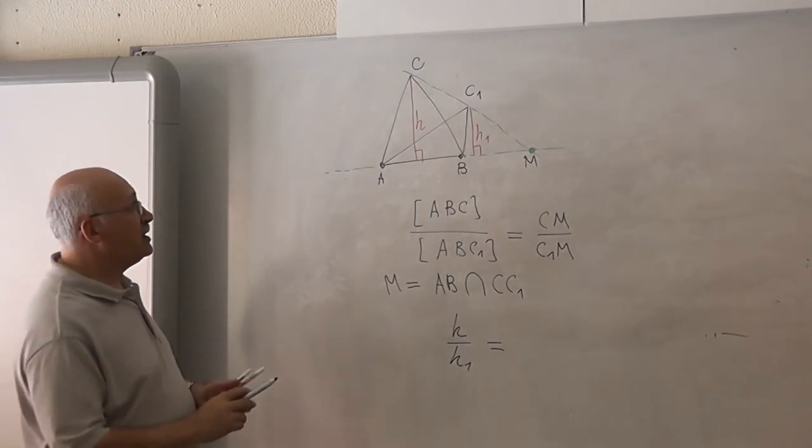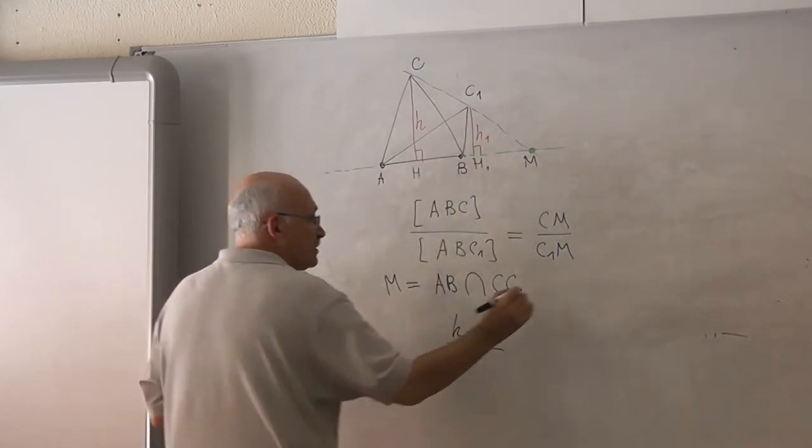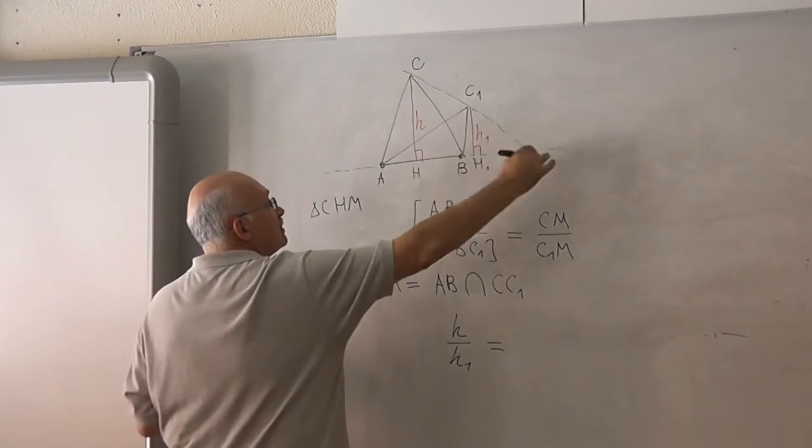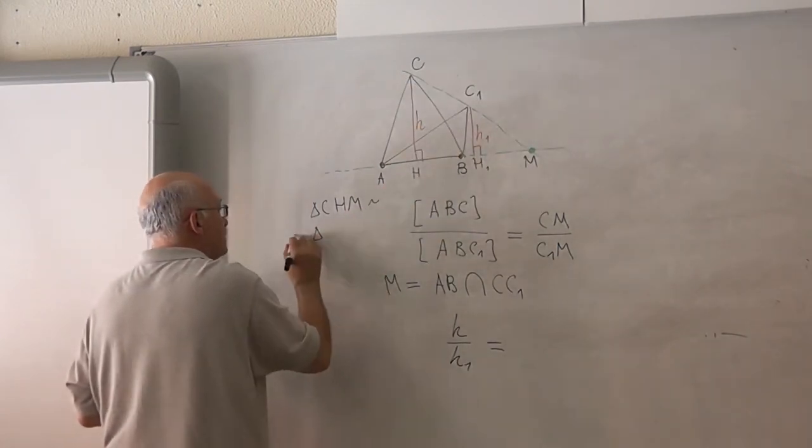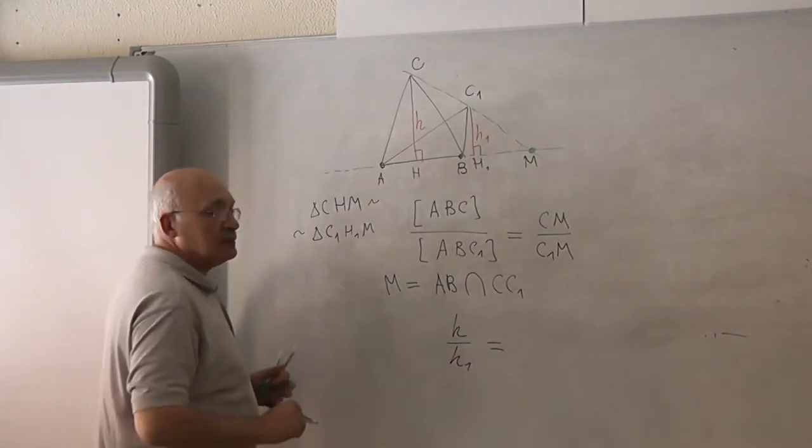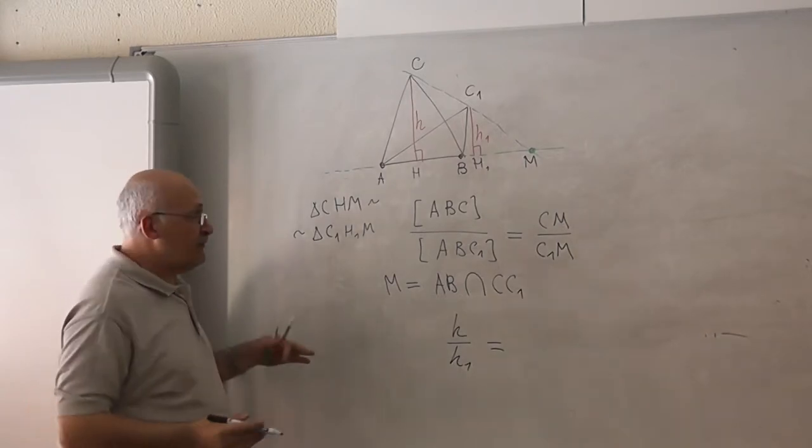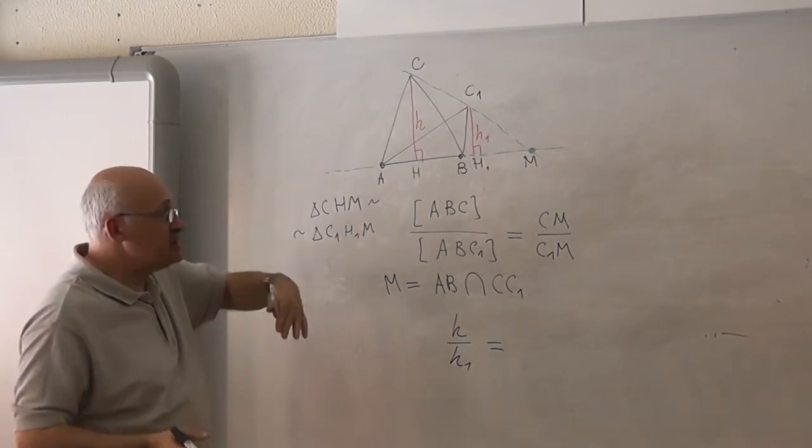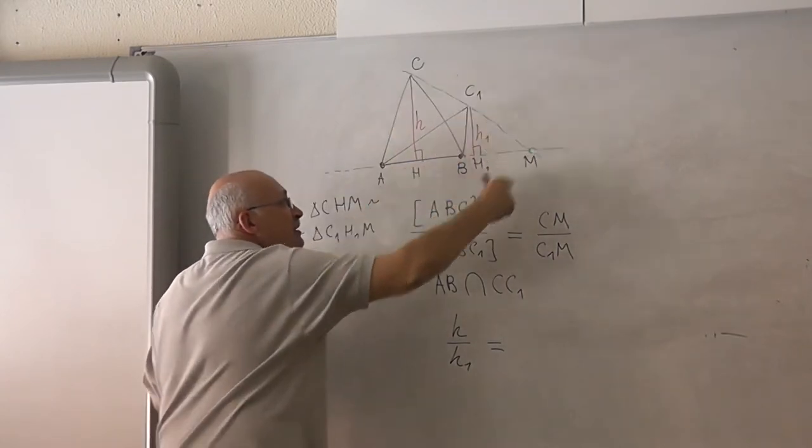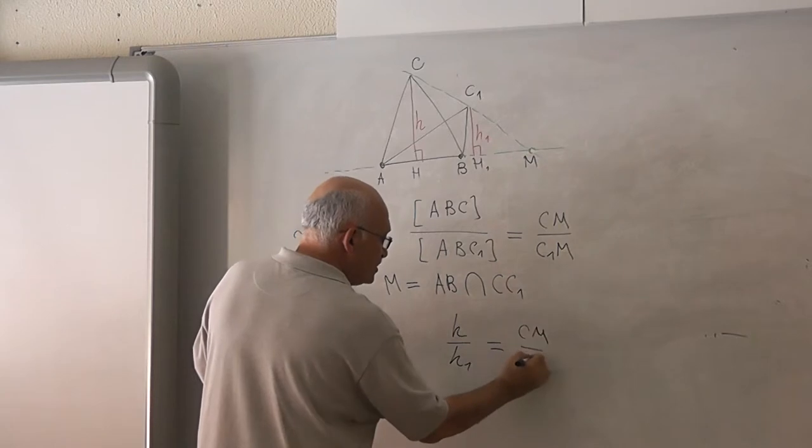And now we consider two triangles. Triangle CHM, this one, right triangle. Triangle C1H1M. They are similar. Do you know? Yes. Therefore, the ratio of their sides, the corresponding sides, is the same. The ratio of their heights is the same as the ratio of their hypotenuse. So it is CM to C1M and that's it. Easy.